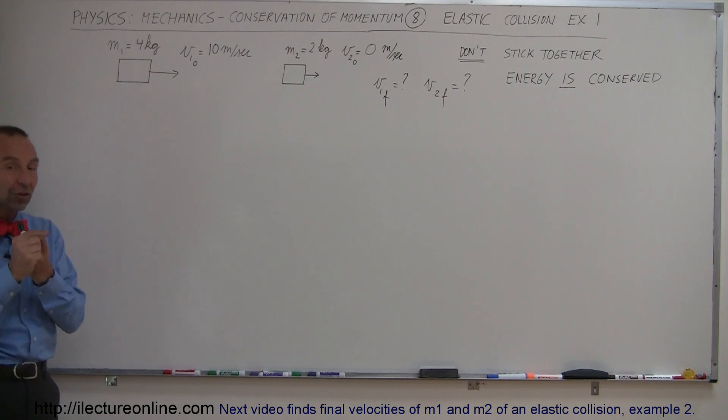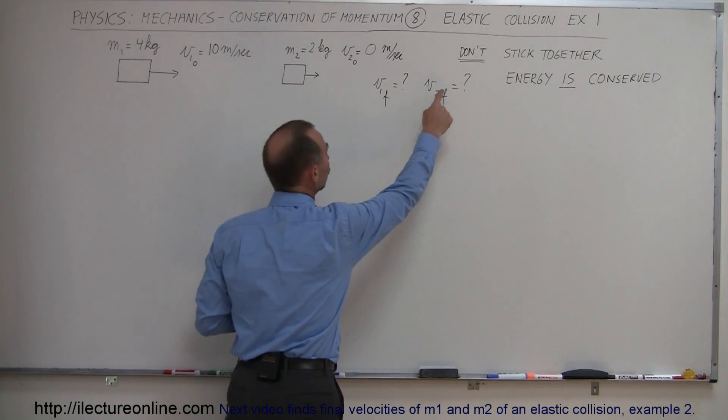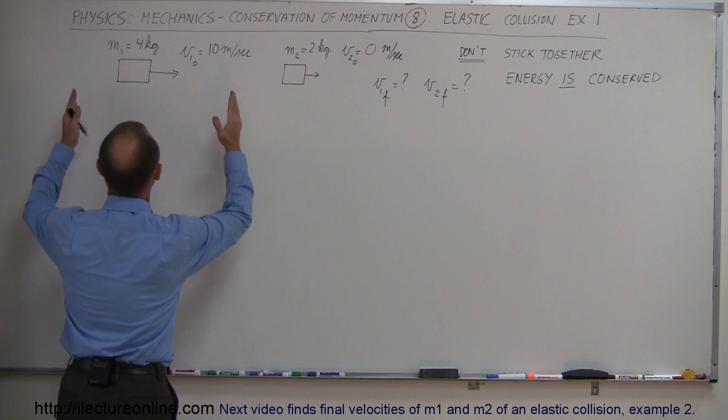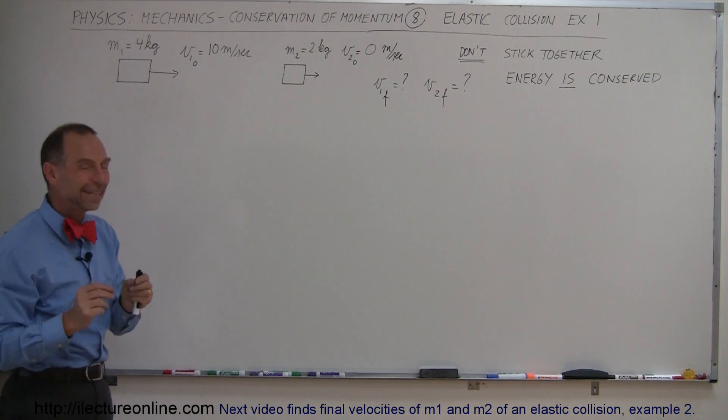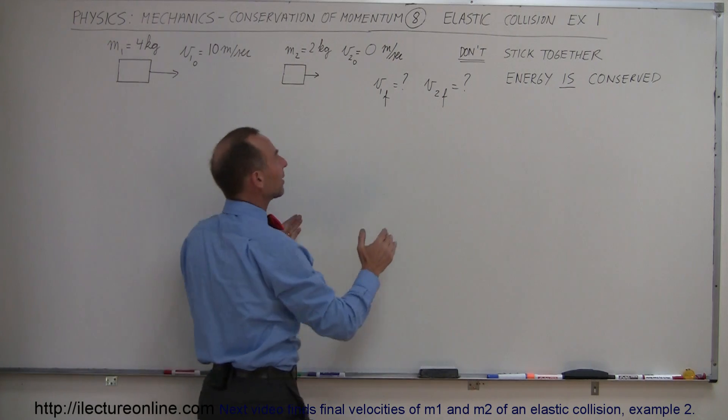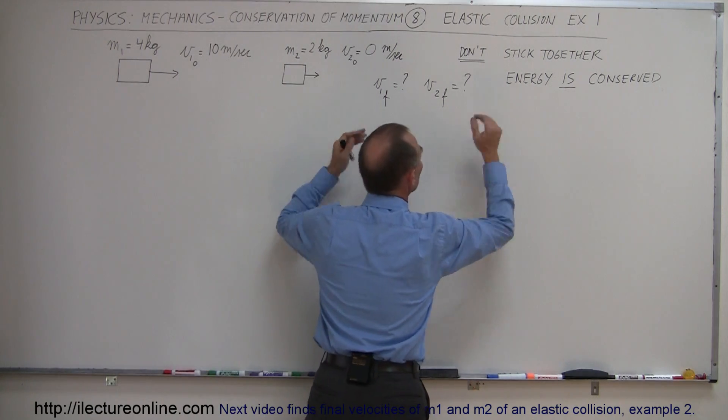Alright, so the idea is that energy is conserved. They don't stick together so the objects have independent velocities after the collision. And so how do we solve that? We're going to have to solve for two unknowns. And if we only use the conservation of momentum, we're not going to be able to solve it because there's two unknowns there.